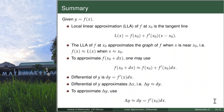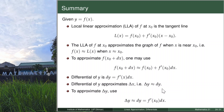Here is our summary for local linear approximation and differentials. Local linear approximation is the tangent line — a linear function used to approximate the graph of f when x is near x₀. To approximate f(x₀ + dx), we use the alternate form. The differential of y is dy = f'(x) dx, and delta y is approximated by dy whenever dx is close to zero.